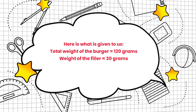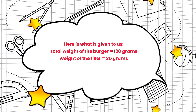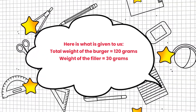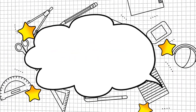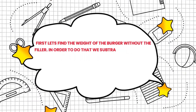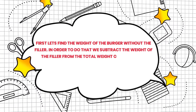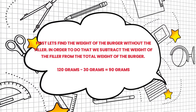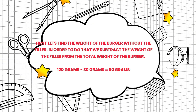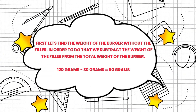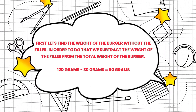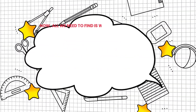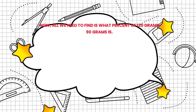Total weight of the burger equals 120 grams; weight of the filler equals 30 grams. First, let's find the weight of the burger without the filler. In order to do that, we subtract the weight of the filler from the total weight of the burger: 120 grams minus 30 grams equals 90 grams.